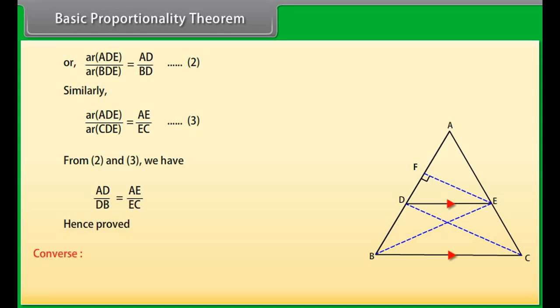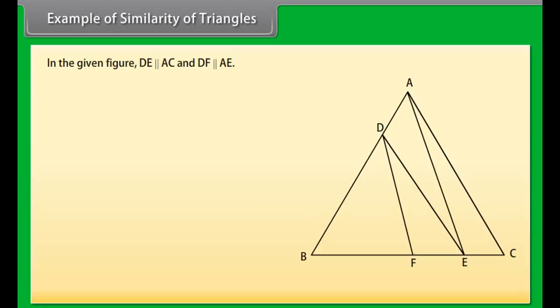The converse of this theorem is also true, which says that if a line divides any two sides of a triangle in the same ratio, then the line is parallel to the third side. Example: In the given figure, DE is parallel to AC and DF is parallel to AE. Prove that BF upon FE equals BE upon EC.